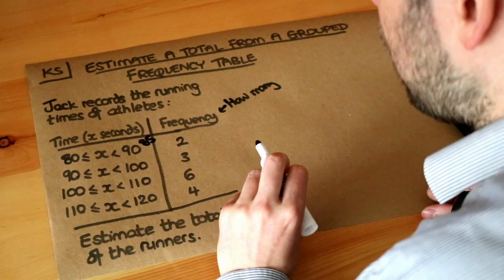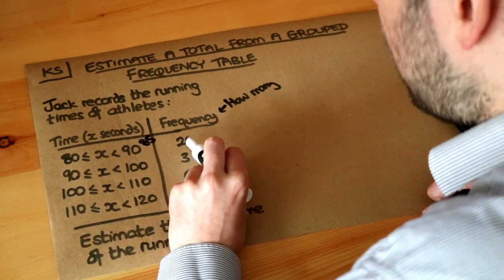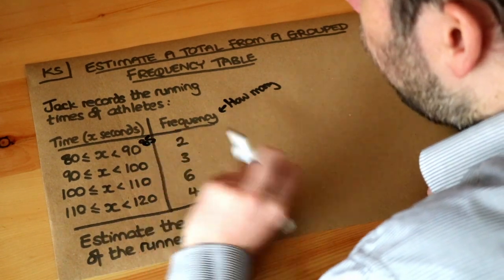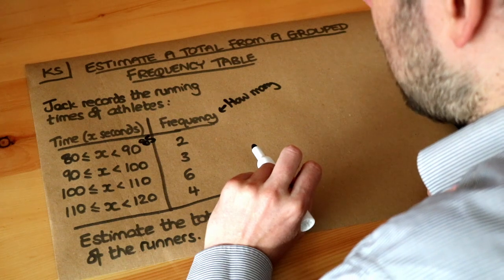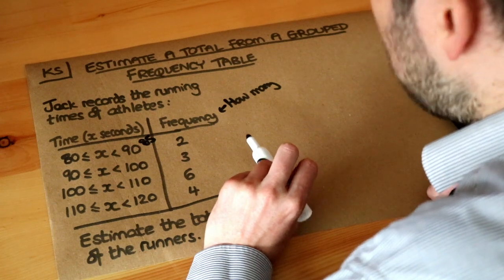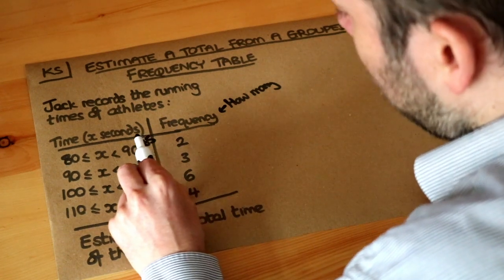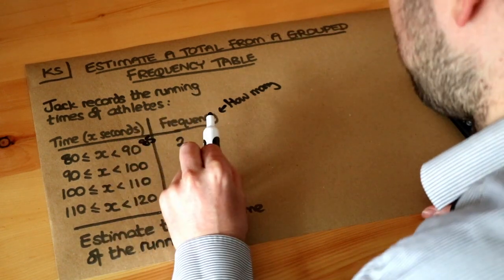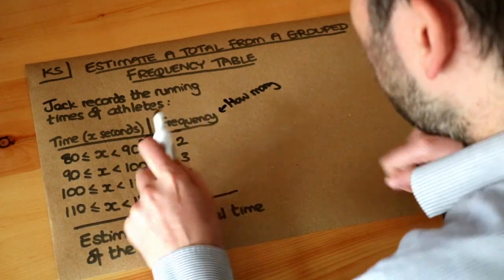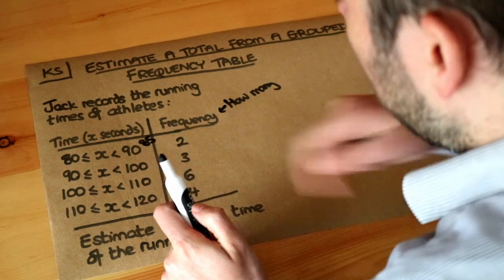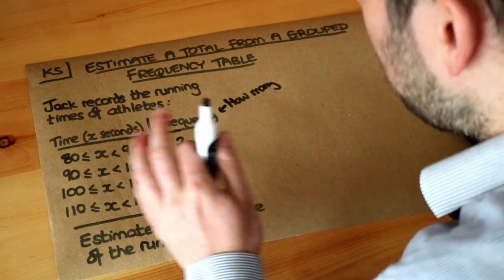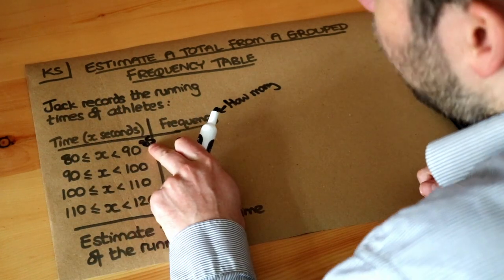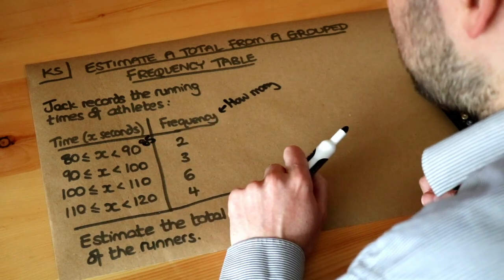So without knowledge of what those athletes' times were, we can assume those two athletes got a time of 85 seconds each. It might be that one of them got a time of 83 seconds and the other one a time of 87 seconds, but we kind of expect them to average out at 85 seconds. So without that knowledge, that seems like a common sense guess of what their times might have been.